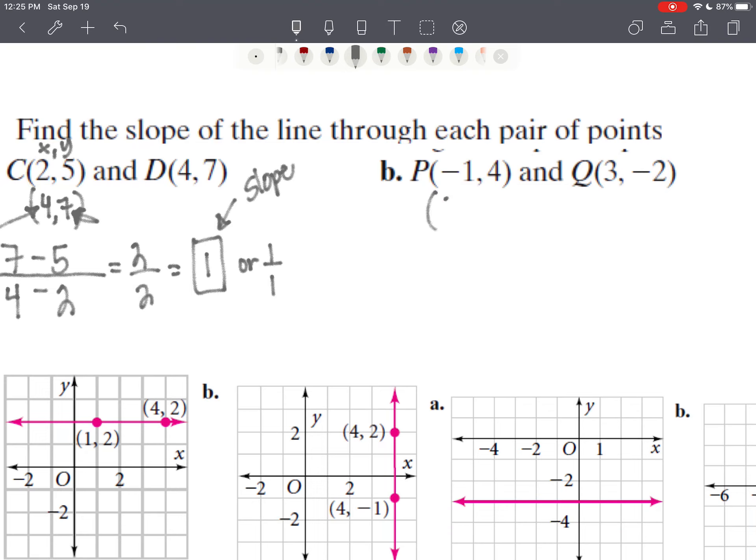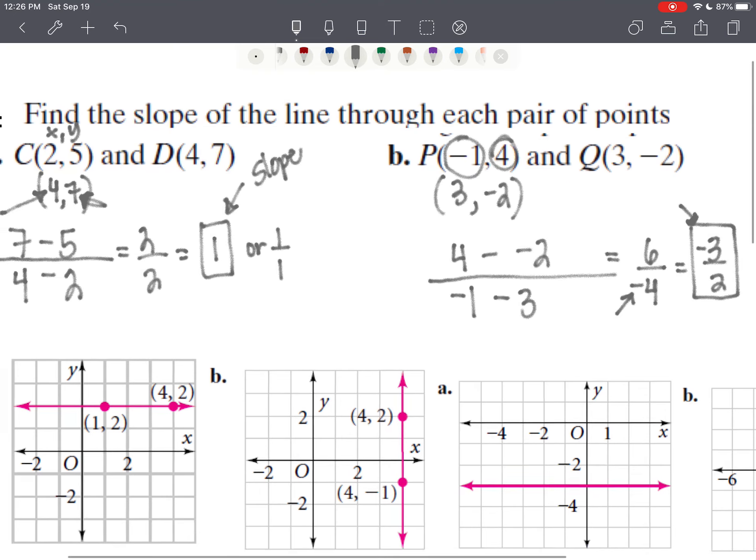Okay, if you're back, the first thing I hope that you did was rewrite the ordered pairs vertically. And then perhaps you said 4 minus negative 2 in the numerator. Since I started with 4 in the numerator, I have to start with negative 1 in the denominator. Negative 1 minus 3. So that gives us 6 over negative 4, which is negative 3 over 2. We always move the negative to the numerator. You never leave your negative in the denominator.